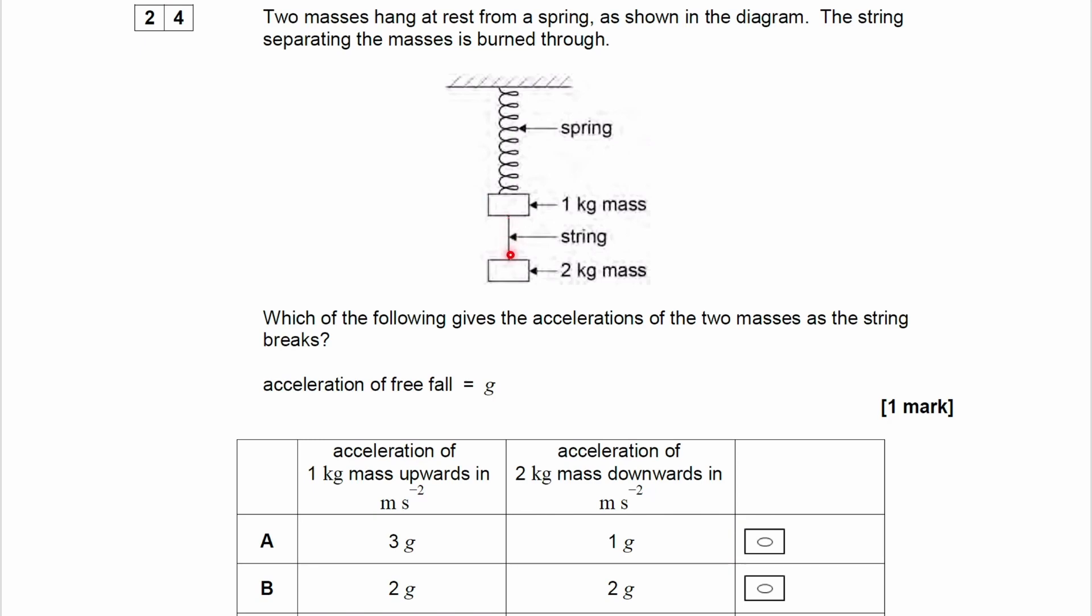This string is burnt through, so it effectively gets cut. Then, the 2kg mass will accelerate downwards. The 1kg mass, because of the tension in the spring and the reduction in the downward force with the removal of the 2kg mass, this mass will then move upwards.